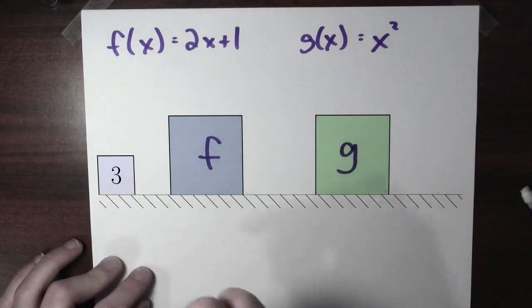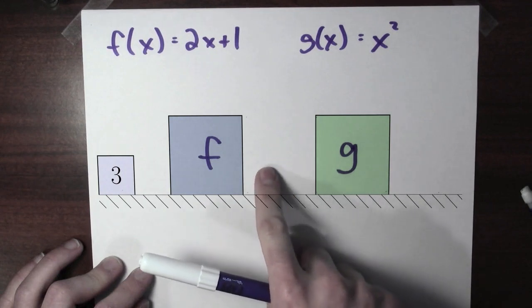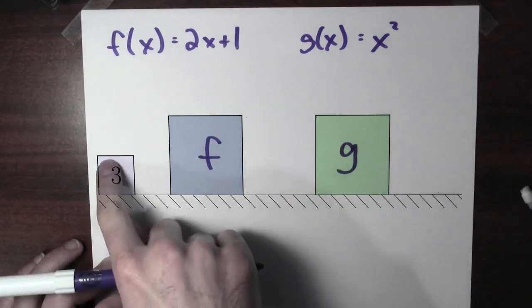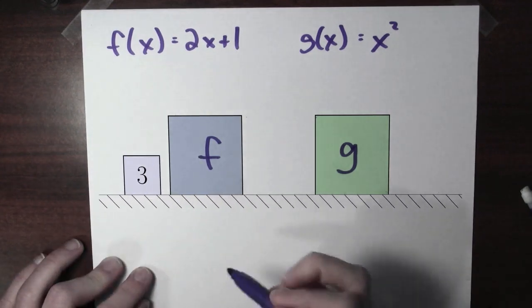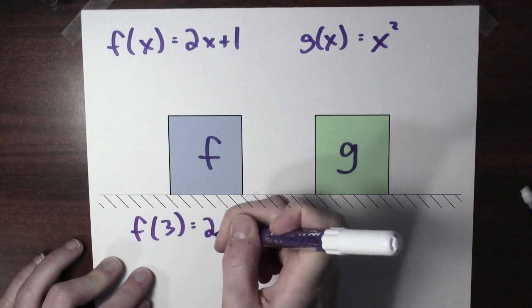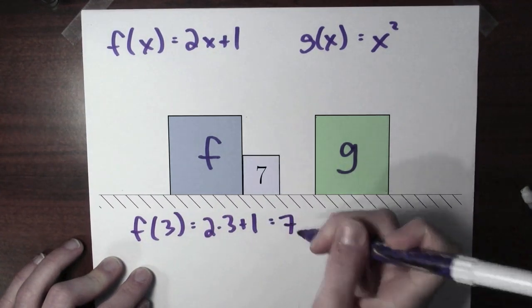And now here, I've got a number 3, and I'm going to run that number through the first function. And whatever comes out of the first function, I'm going to plug into the second function and see what comes out. So let's take that number 3. Let's start moving the conveyor belt. It's going to go through the function f. f of 3 is 2 times 3 plus 1, which is 6 plus 1, which is 7.